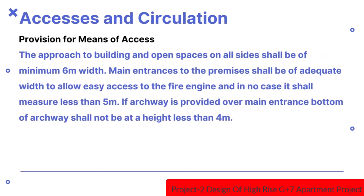Regarding accesses and circulation: the layout and design of spaces for horizontal and vertical movement may be planned suitably by adopting the following guidelines. The approach to building and open spaces on all sides shall be of minimum 6m width. The said open space shall be kept free from obstructions and shall be motorable. Main entrances to the premises shall be of adequate width to allow easy access to the fire engine and in no case shall be less than 5m.